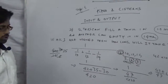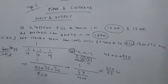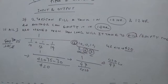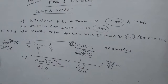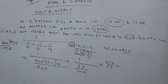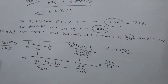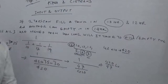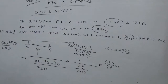So this is the simple type of question to solve a pipes and cisterns problem. In this way we can solve all these problems very fast. These are the basic types of pipes and cisterns problems with their solution structures.